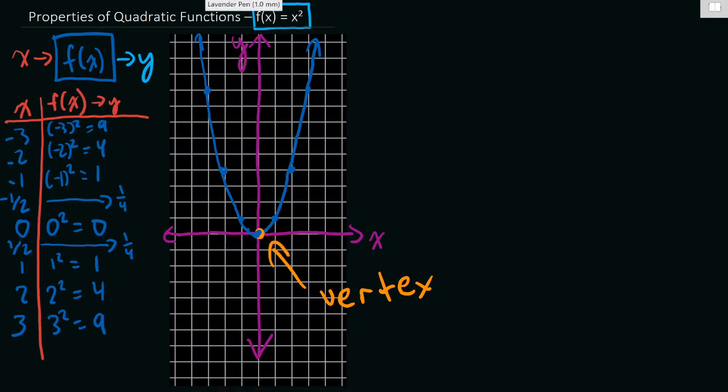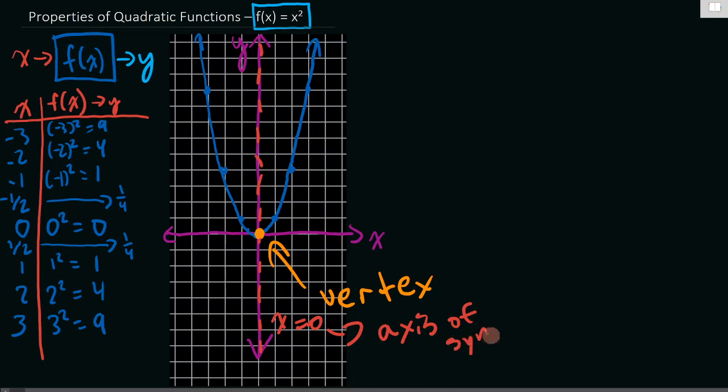We also noticed that this function was symmetrical. So this dotted line down the middle, x = 0, is the axis of symmetry.